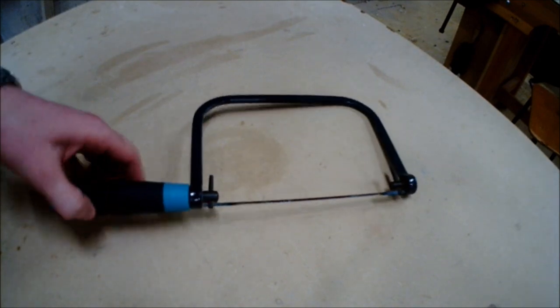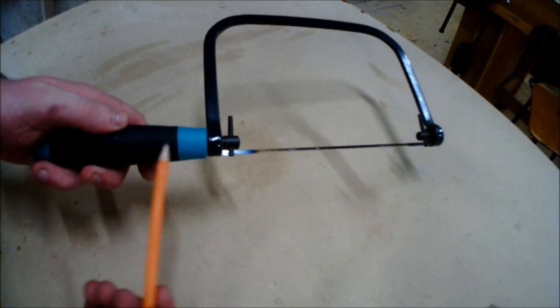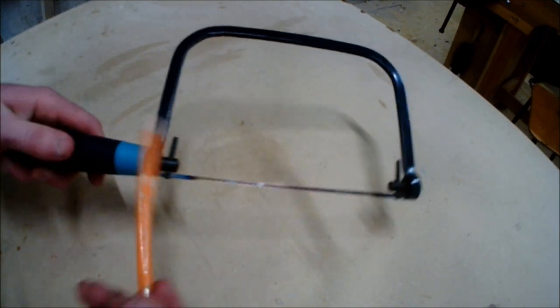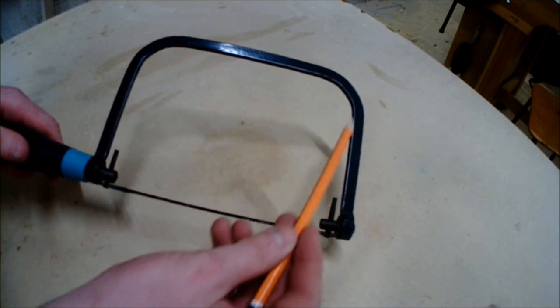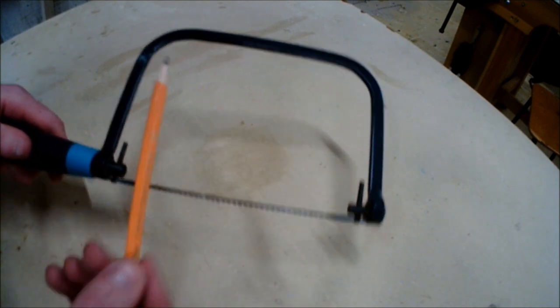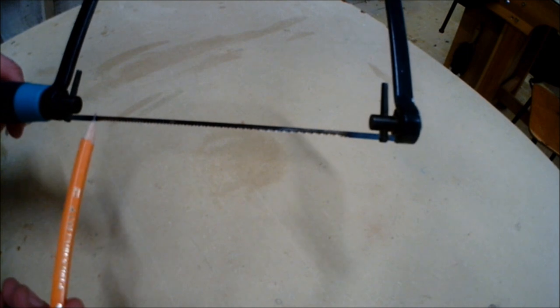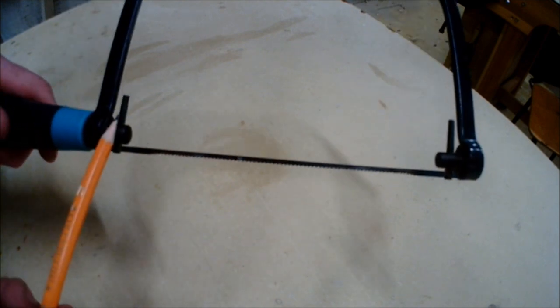The coping saw consists of four main parts: the handle, the frame, the blade, and two pins.